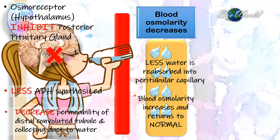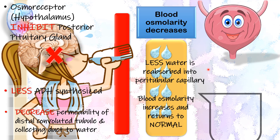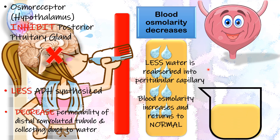Meanwhile, all this excess water in the tubules will be excreted as a large volume of urine, and because the volume is excess, it will be dilute.